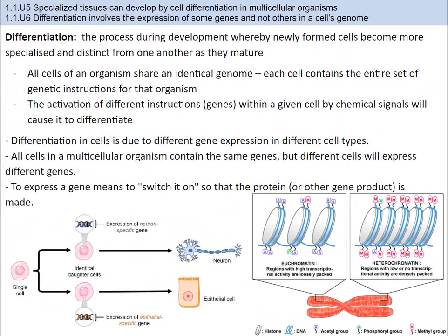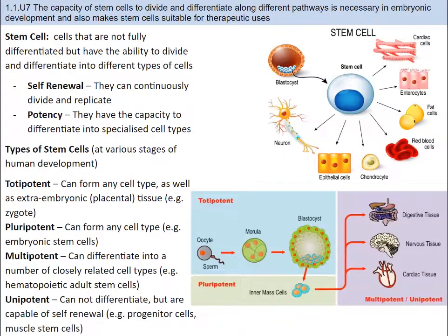Additionally, the external environment can regulate gene expression. For example, in some animals there's a temperature-sensitive gene that controls fur pigmentation, allowing it to be adapted for warmer or cooler climates.